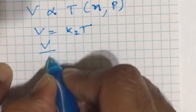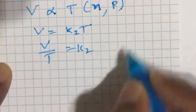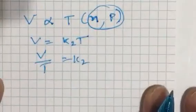So V by T is a constant. This is true for a fixed mass of a gas at a constant pressure.